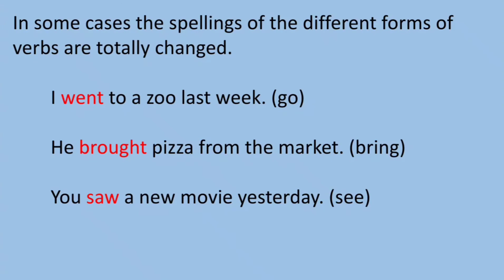In some cases, the spellings of the different forms of verbs are totally changed. See these examples: I went to a zoo last week. Here, went is the past form of verb go. He brought pizza from the market. Here, brought is the past form of the verb bring. Here, saw is the past form of verb see.